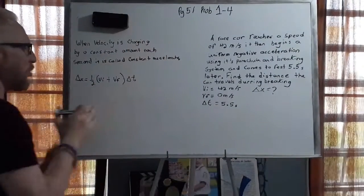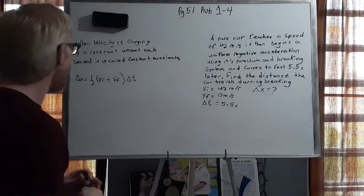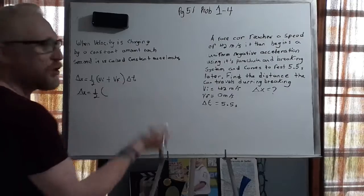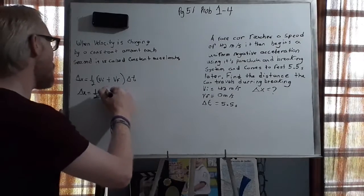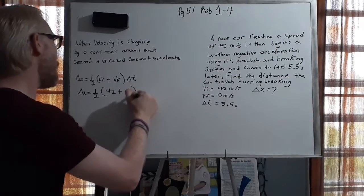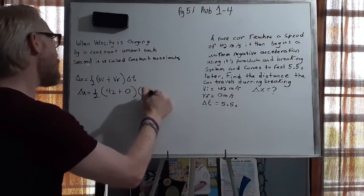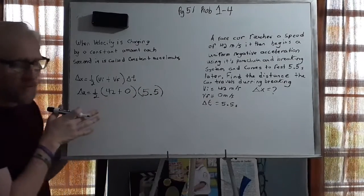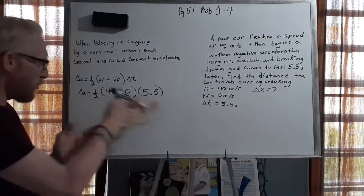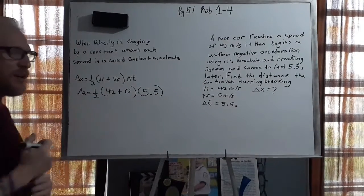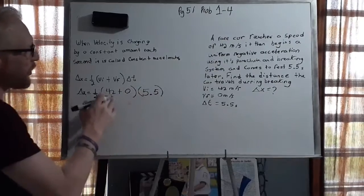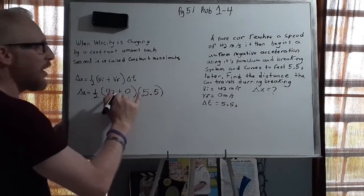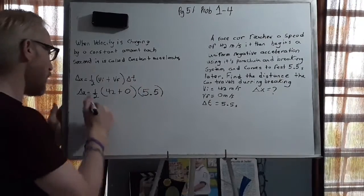And we have the formula right here, so all we're going to do is we're just going to plug them in. And we're going to say that the change in x equals one-half of the initial velocity, which is 42, plus the final velocity, which is zero, multiplied by the change in time, which is 5.5. So what we're going to do is use our order of operations, and we're going to work with our parentheses. And 42 plus zero is 42, and 42 times 5.5 is 231.